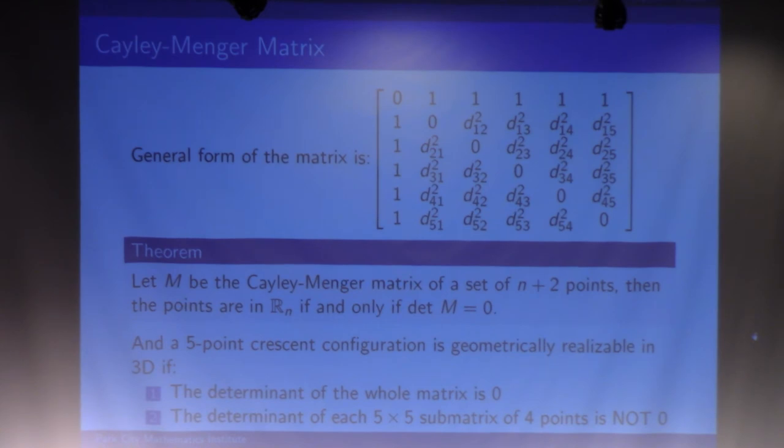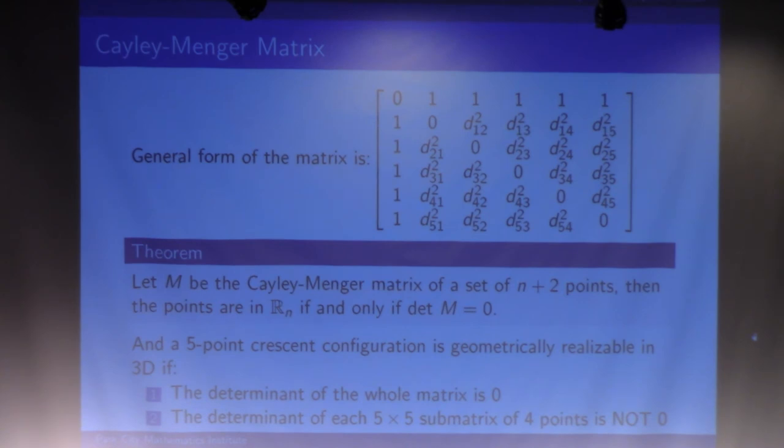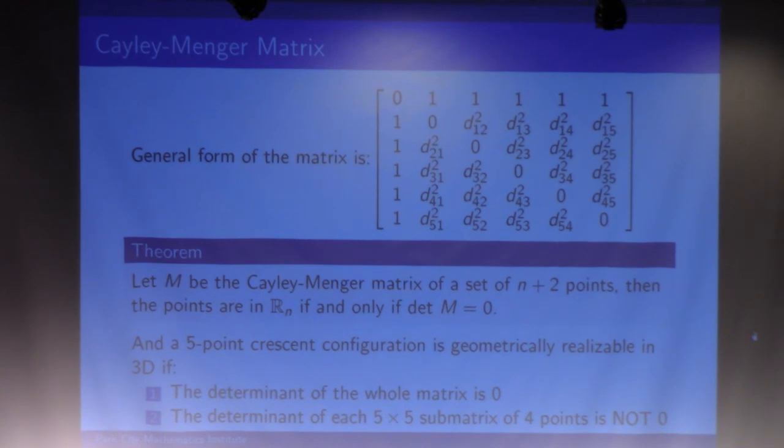To apply this to five points in 3D, we need the determinant of the whole matrix to be zero. However, we need to ensure no four points lie in the same plane. So for each five-by-five sub-matrix formed by four points in the configuration, we need the determinant to not equal zero.